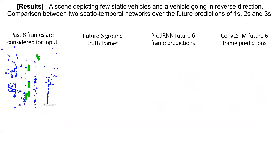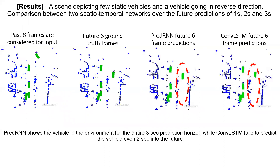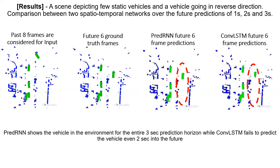Similarly, in this scenario, we have a few static vehicles and one vehicle moving in the reverse direction. Pred-RNN shows the vehicle in the environment for the entire three-second prediction horizon, while ConvLSTM fails to predict the vehicle even two seconds into the future.